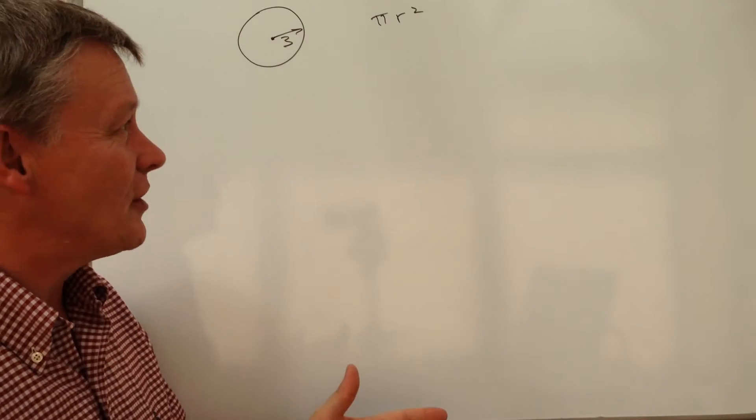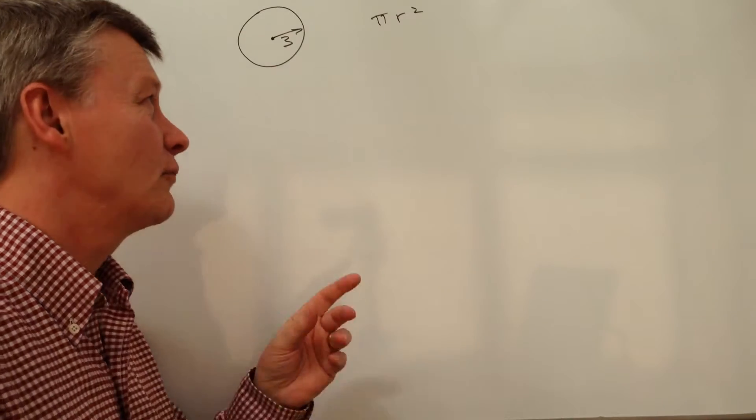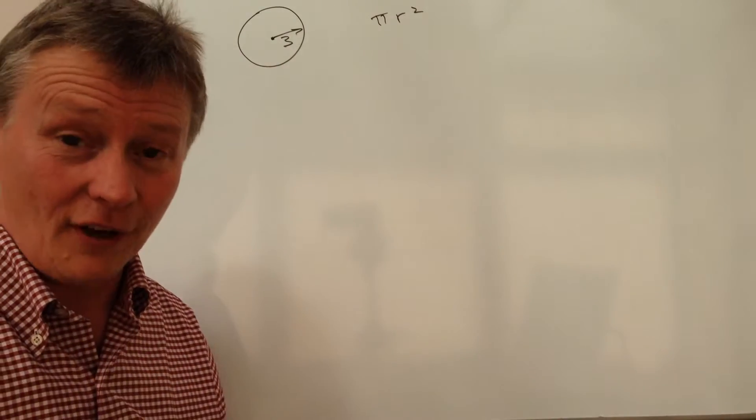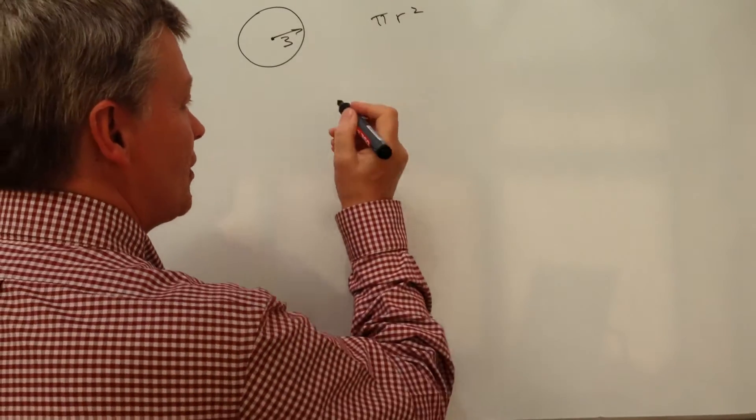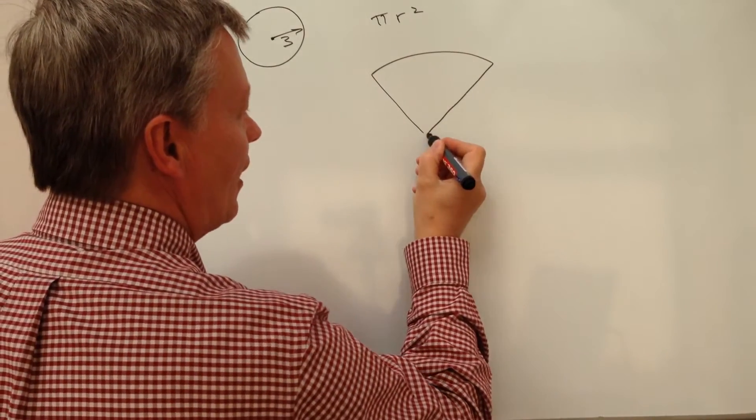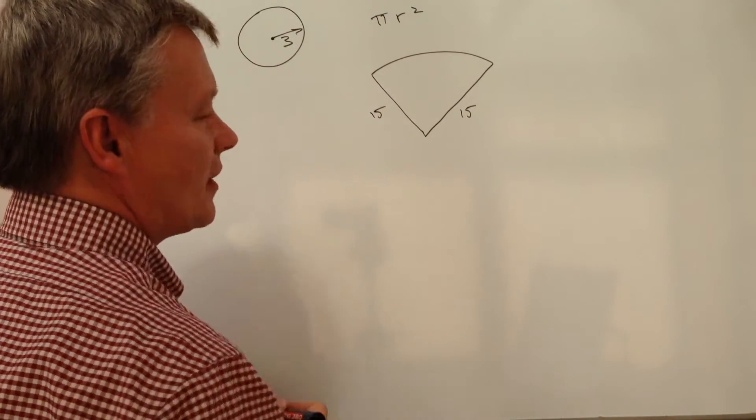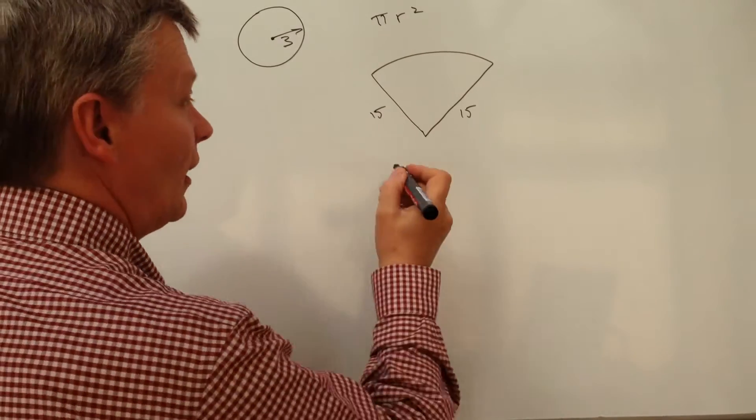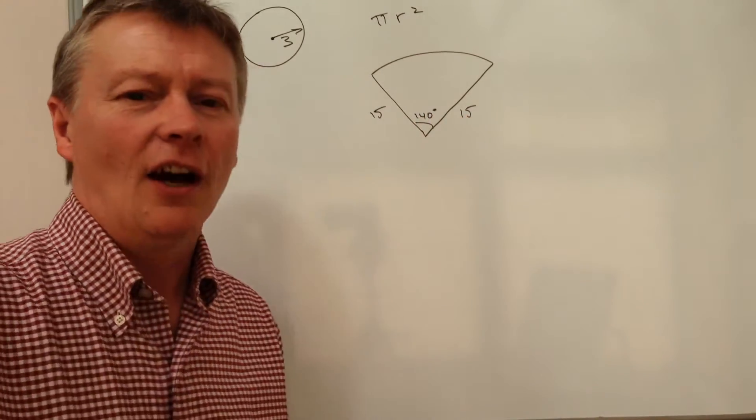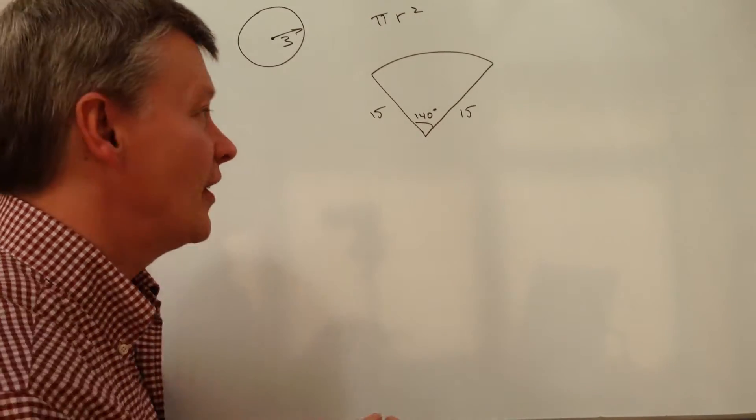Well, these questions are very similar. They are pitched at A star grade. And all you need to really appreciate is that we're dealing with a fraction of a circle. So let me give you that example. So what we've got here in this question is a sector like that. And this particular one has a radius of 15 centimeters. And the internal angle here is 140 degrees. And what they've asked us to do is to calculate the area of this sector.